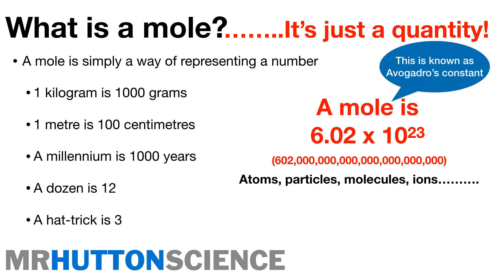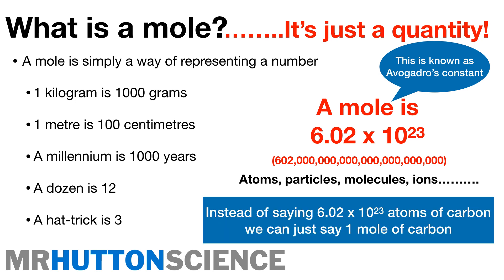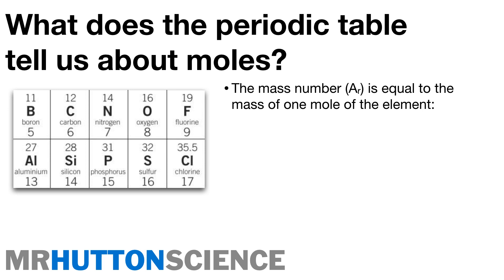We use 6.02 × 10²³ to represent the number of atoms, ions, particles, or molecules we might have. So 6.02 × 10²³ atoms is known as a mole, also called Avogadro's constant. It's called a constant because it always stays the same — just as one kilogram is always a thousand grams, a mole is always 6.02 × 10²³. So instead of saying '6.02 × 10²³ atoms of carbon', we simply say 'one mole of carbon'.